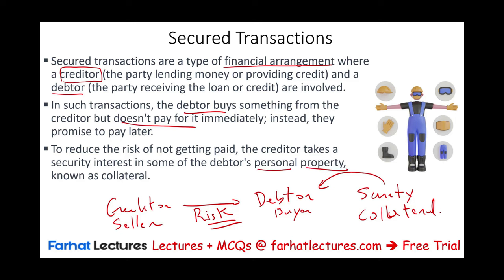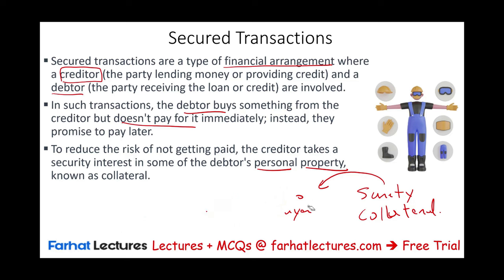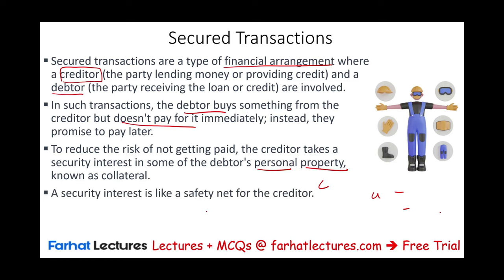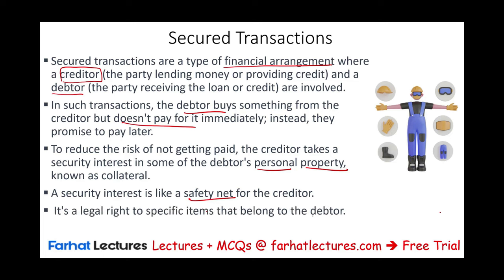Personal property means it's not real property — it's movable property. Basically, we're looking at something of value that the creditor will have an interest in. This security interest works like a safety net for the creditor. In case the debtor did not pay, the creditor can possess the asset, take it back, sell it, and satisfy the debt. A secured transaction is this legal right to specific items belonging to the debtor.